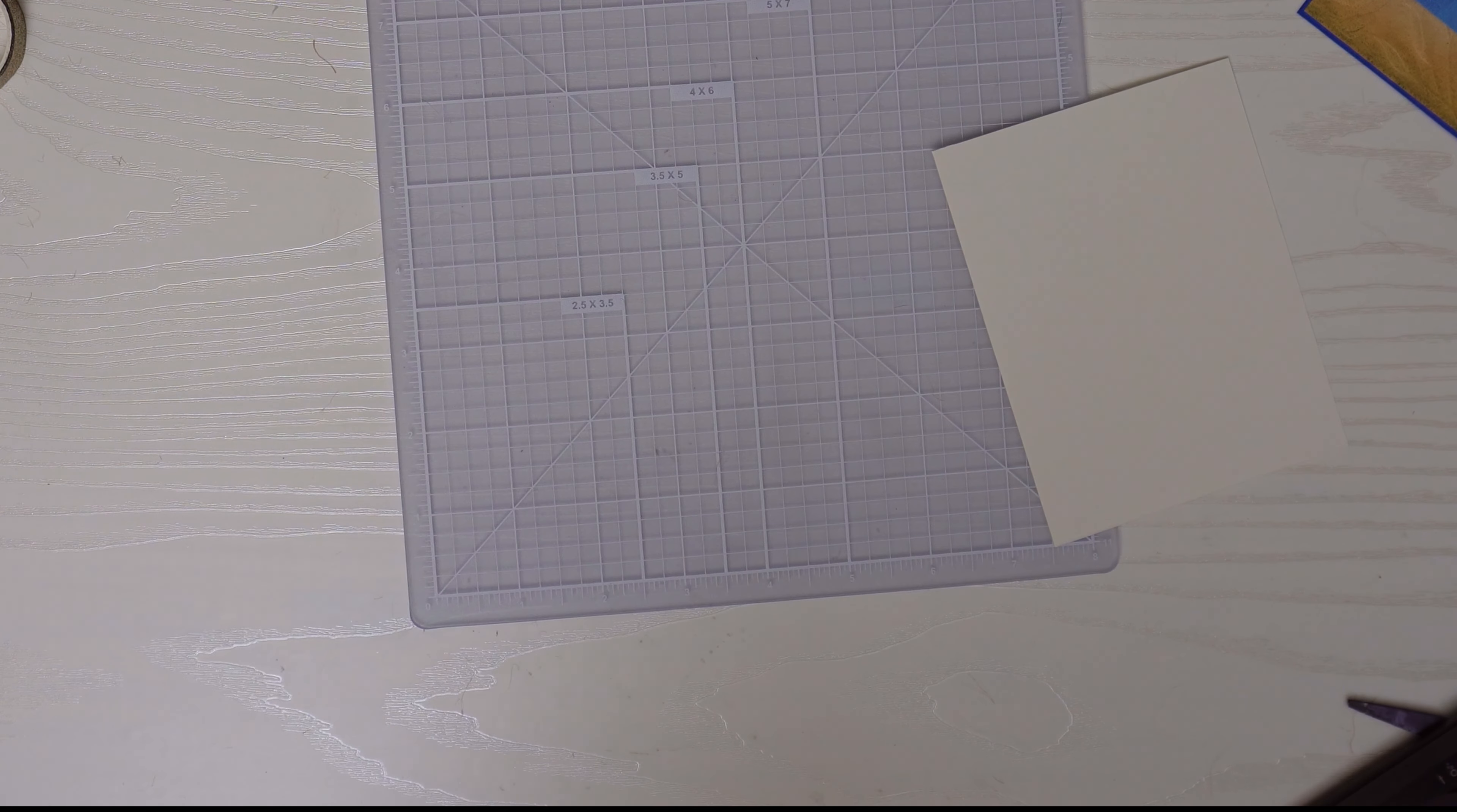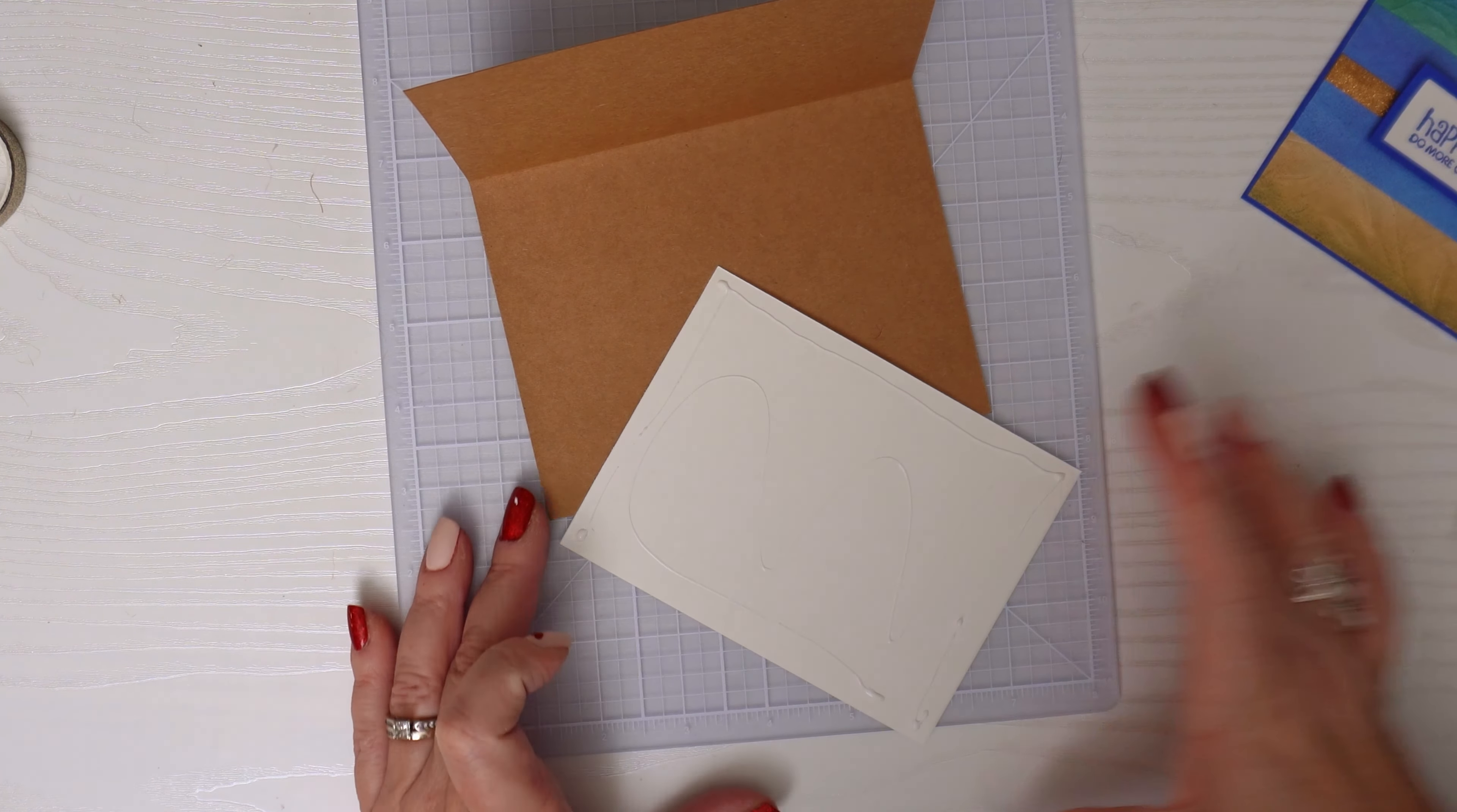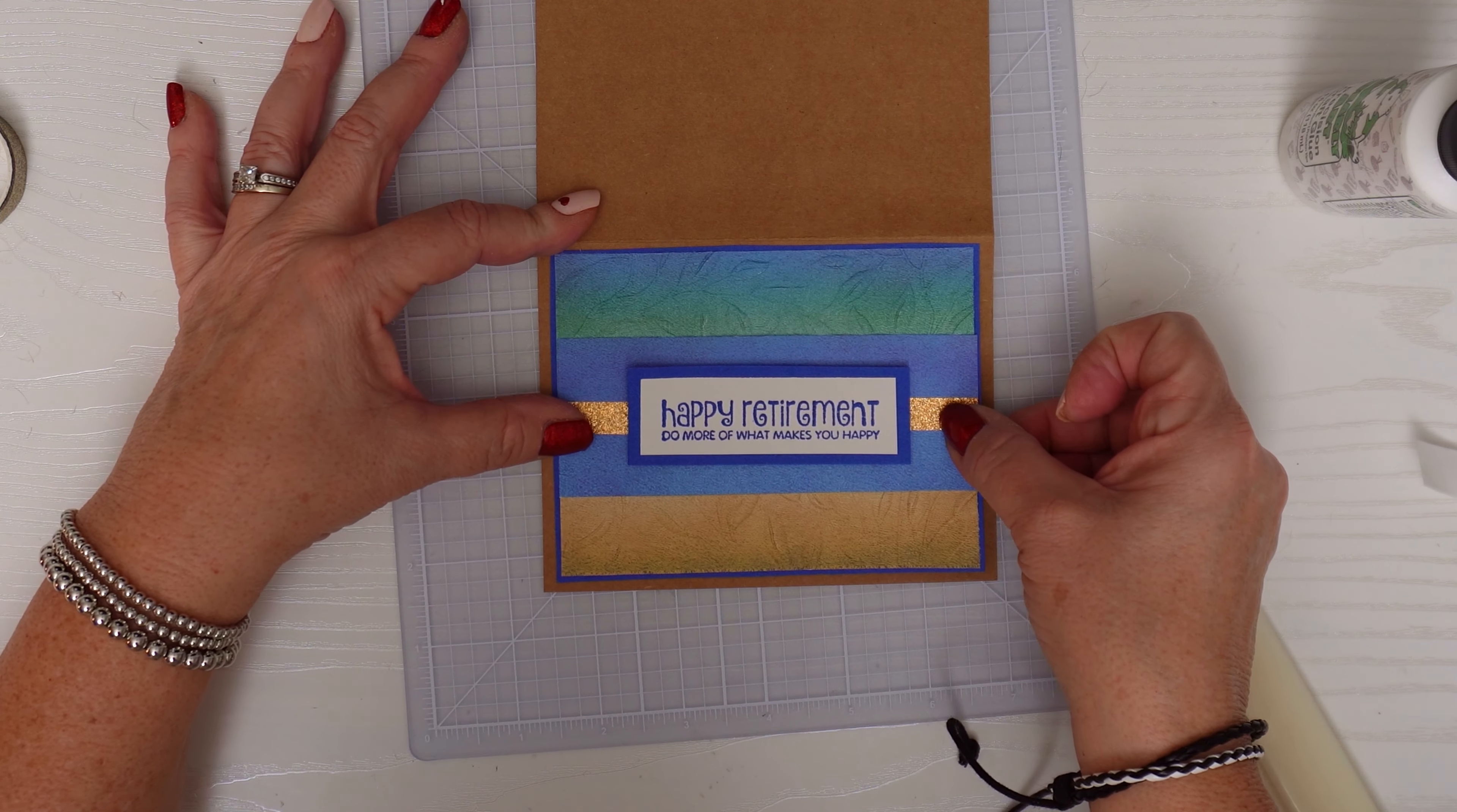The next thing we need to focus on is the inside of the card. Not everybody does the inside of the card. Let me know if you're an inside person or if you just only work on the front. I'm adding off-white cardstock to the inside of the card base and I'll need to trim it down just a bit because it's the same size as the card base.